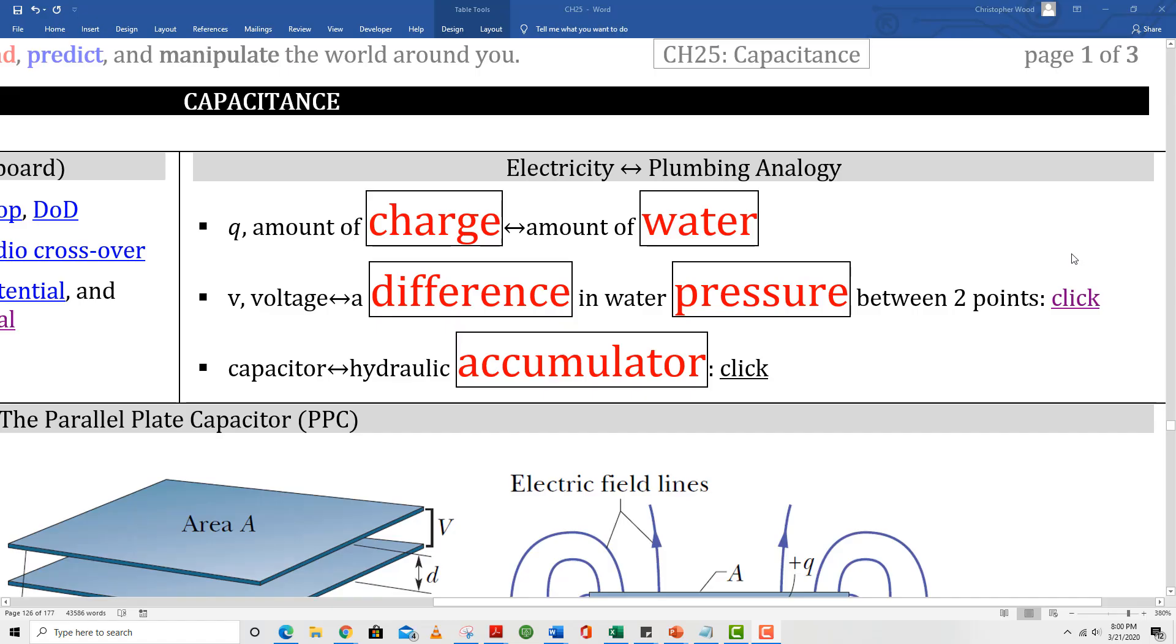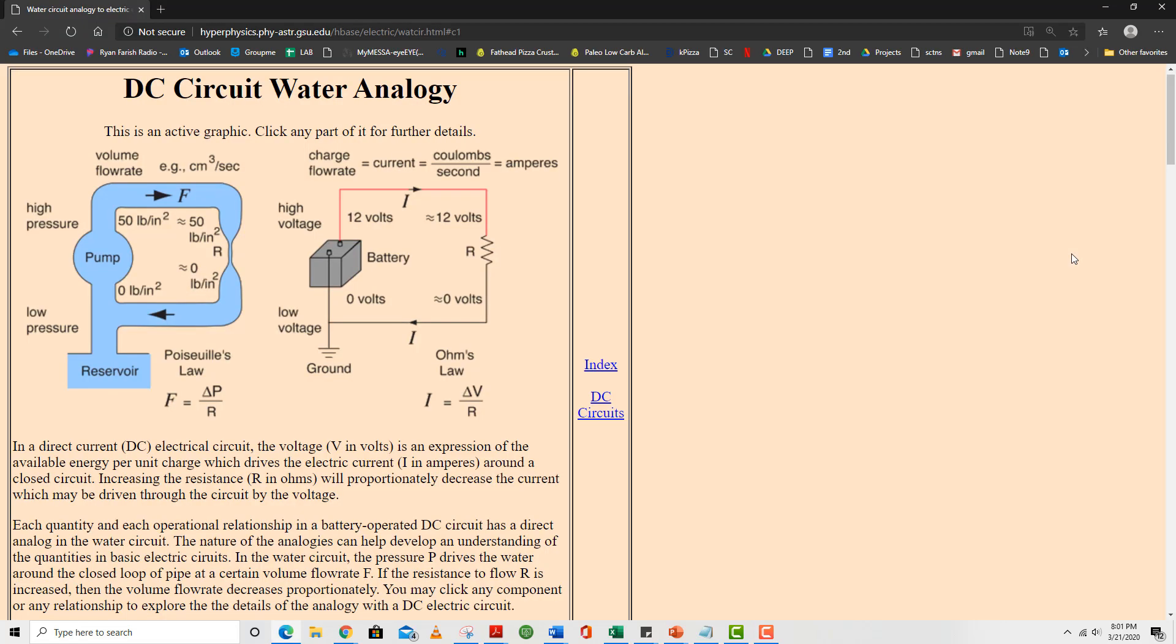Let's talk again about the electricity plumbing analogy. The amount of water that flows through a pipe is analogous to Q, the amount of charge that flows through a wire. From chapter 24, we said voltage is analogous to a difference in water pressure. A water pump boosts low pressure water to high pressure water so the water comes out of your faucet at a nice rate. And a battery takes low voltage or low energy electrons and boosts them to a higher voltage or higher energy, so electricity flows nicely through our wires.